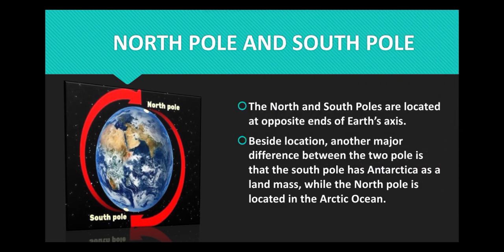North Pole and South Pole. The North Pole and the South Pole are located at opposite ends of the Earth's axis. Besides location, another major difference between the two poles is the South Pole has Antarctica as a landmass while the North Pole is located in the Arctic Ocean.